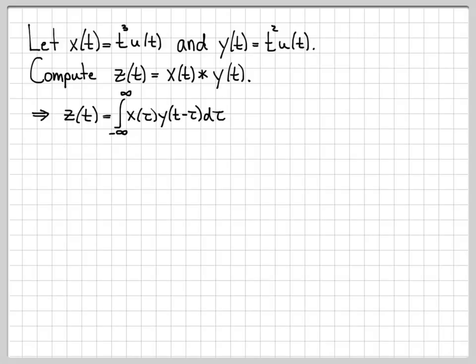Really what that means is perform an integration. And that integration is x of tau times y of t minus tau d tau. So this is just the definition of the convolution integral. And this is what we want to evaluate for these specific x of t and y of t in this problem where we're dealing with polynomials.